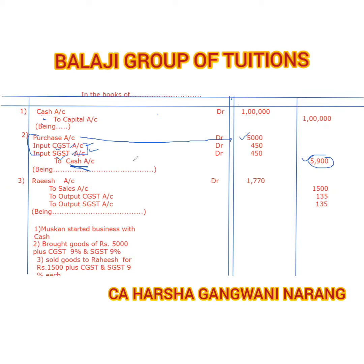This GST is going to be an asset for Muskan, which we will receive credit for in the future. As of now, understand clearly: the GST you pay at the time of purchase is called input GST — if it is CGST, then input CGST; if it is SGST, then input SGST. Input CGST and input SGST are debited, representing an asset for Muskan's business.